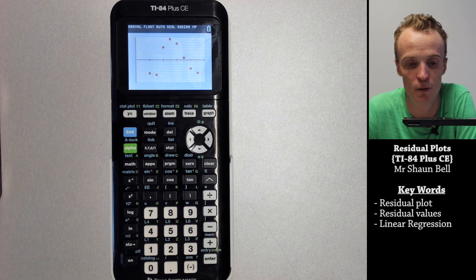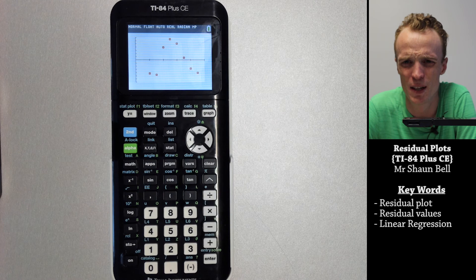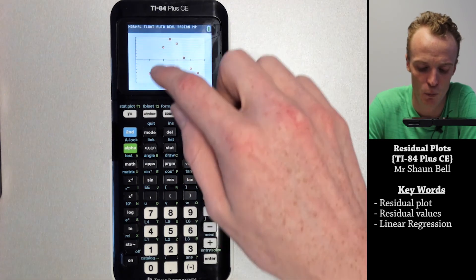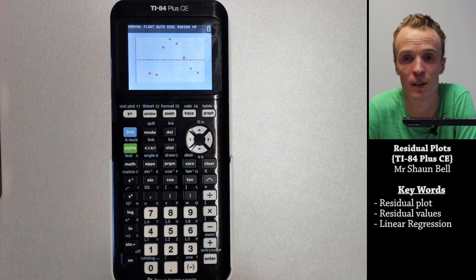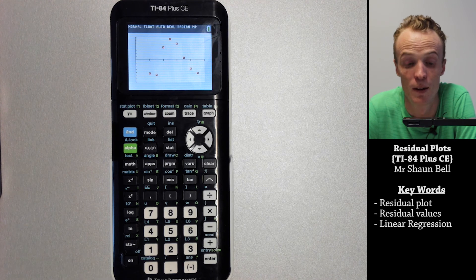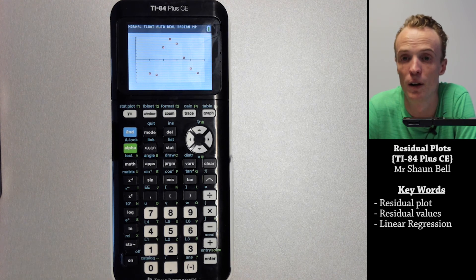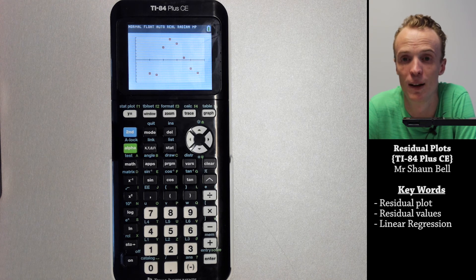So now you can see here I've got the residual graph of these values. And they do seem to be in a bit of a pattern, which might suggest that this might not be a perfect linear relationship occurring between these two variables. But we'll talk about that in a future video. For now this is how we create a residual graph using the TI-84 Plus CE calculator.